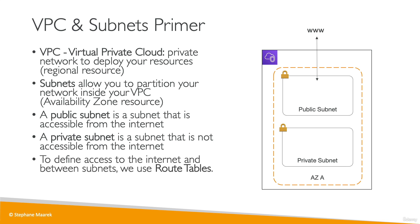To define access to the internet and access between subnets so that resources can communicate, we need to use route tables. So the question is, what do you put in a public subnet?